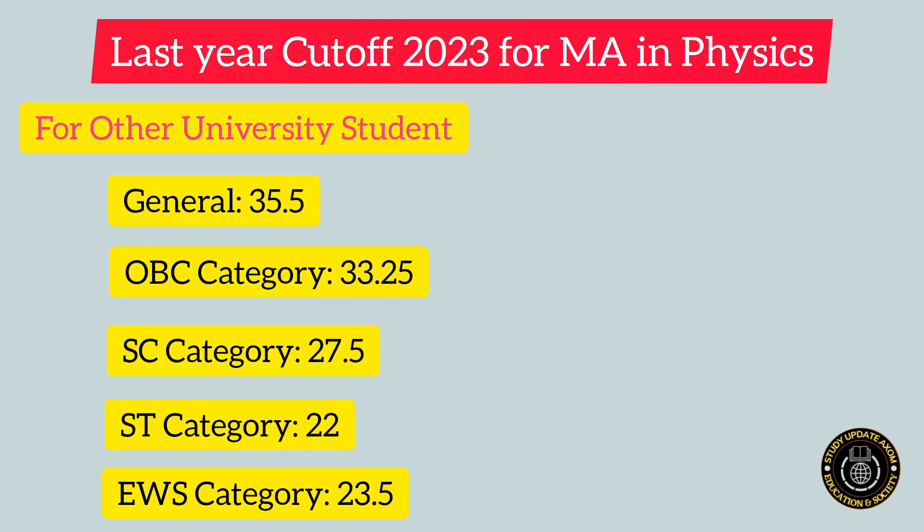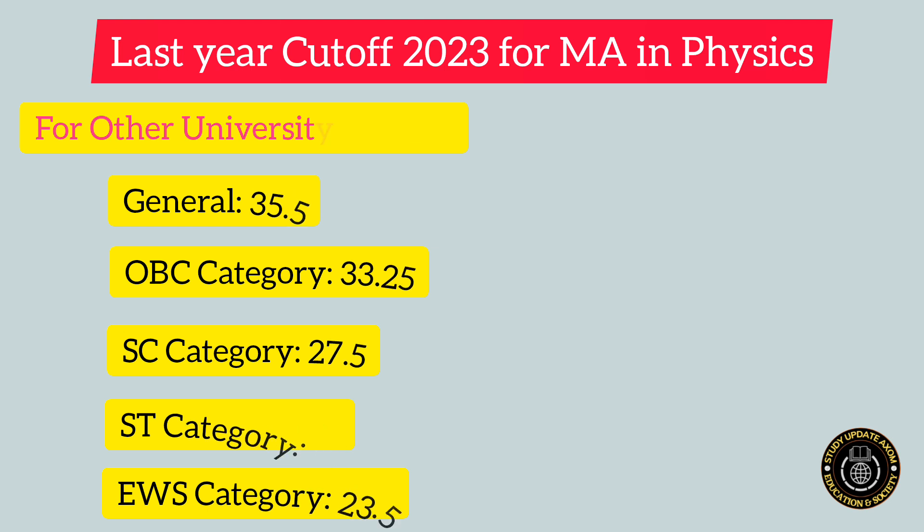Now let us learn about the last year's cutoff for students belonging to universities other than Guwahati University. For the general category, the cutoff was 35.5. For the OBC category, the cutoff was 33.25. For the ST category, it was 27.5. For the SC category, it was 22. And for students belonging to the EWS category, the cutoff was 23.5.